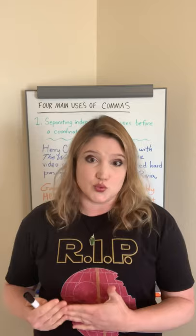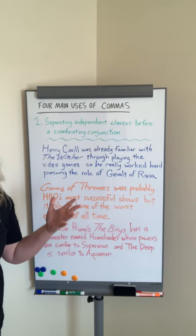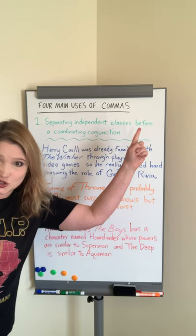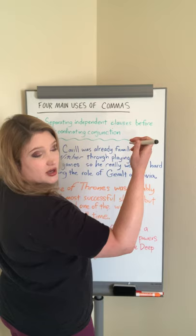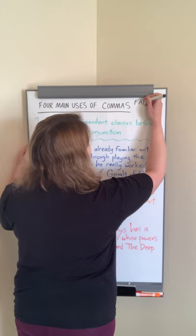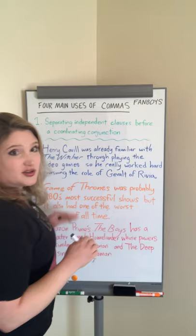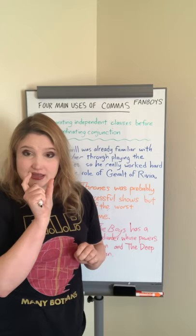So number one — the number one use in no particular order — is that commas are for separating independent clauses before a coordinating conjunction. When I say coordinating conjunction, some people like the acronym FANBOYS. You may have seen this in school. FANBOYS is an acronym that represents all the coordinating conjunctions — the little short words, two or three letters, that link things together.